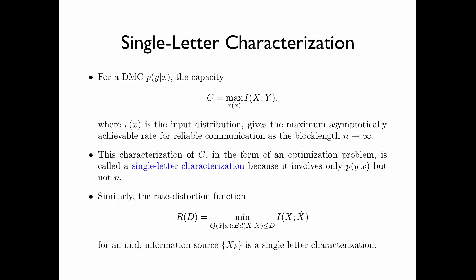Similarly, the rate-distortion function R(D) for an i.i.d. information source X_k, which is equal to the minimum of the mutual information between X and the random variable X-hat overall transition matrices q(x-hat|x), such that the expected distortion between X and X-hat is less than or equal to D, is a single-letter characterization.